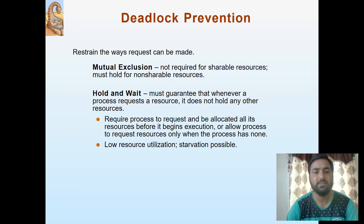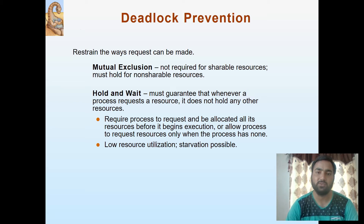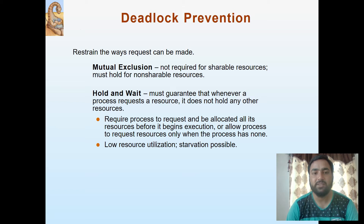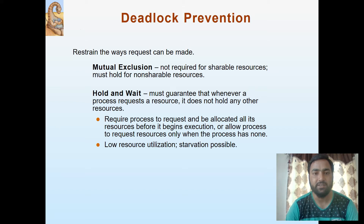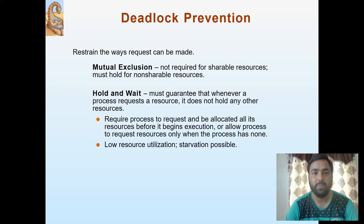Another condition is hold and wait. This must guarantee that whenever a process requests a resource, it does not hold any other resources. To avoid this condition — hold and wait — what hold and wait says is that a process is holding a resource and requesting for another resource. This condition must be avoided. That means if a process is requesting for a particular resource, it must release the other resources that it is holding.